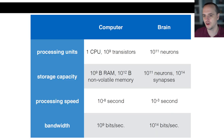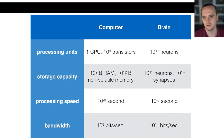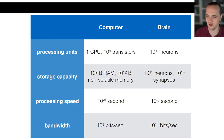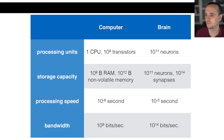Neural nets kind of came out of a want to understand or at least model the human brain. Neural networks are not an exact model of the human brain, obviously. But there are analogs between how neural networks work and how your brain works. Let's just compare computers to brains for a second to see what's going on.